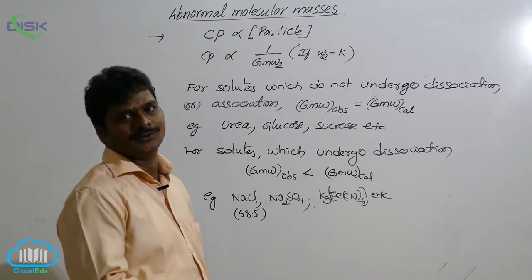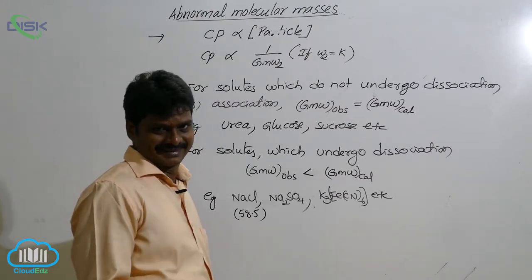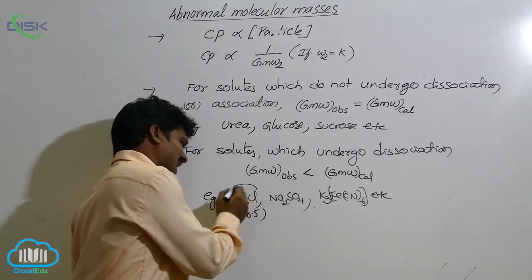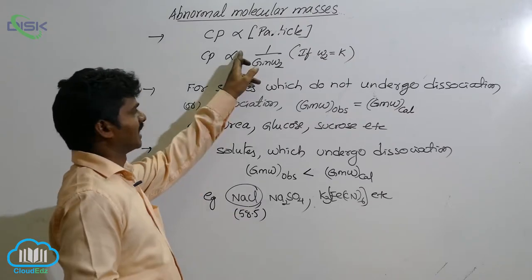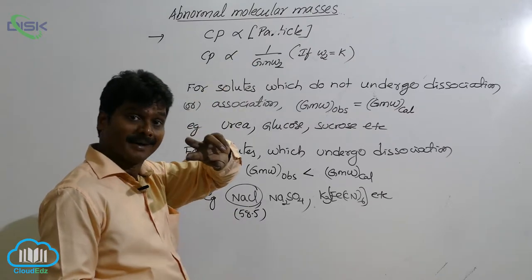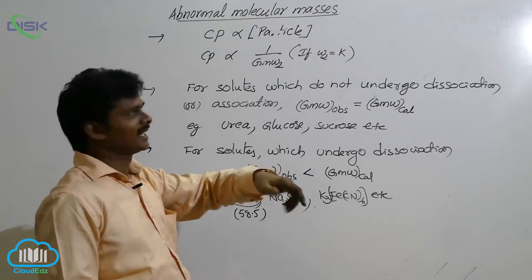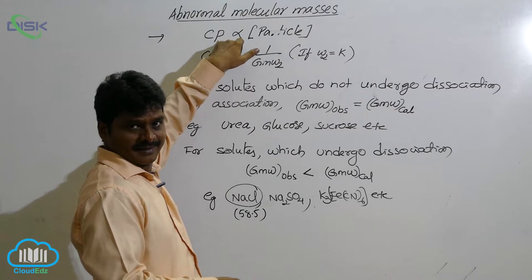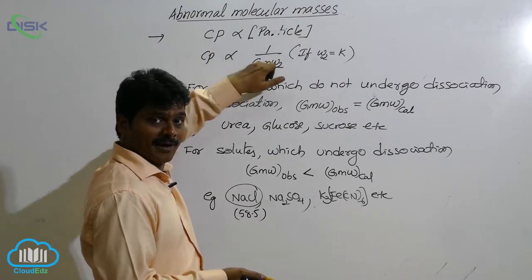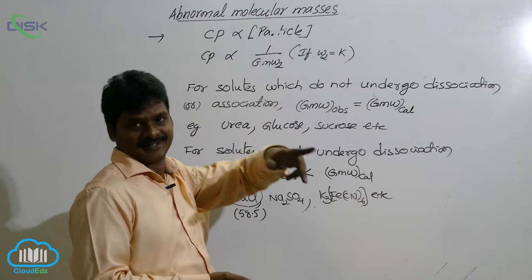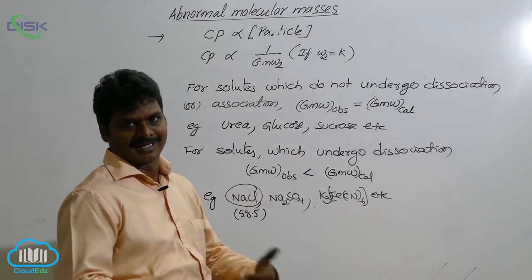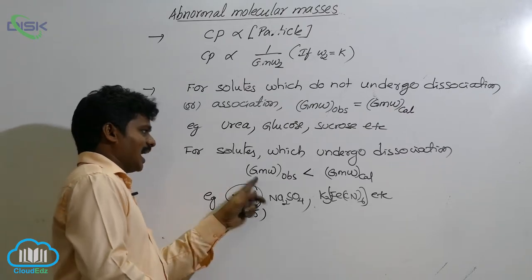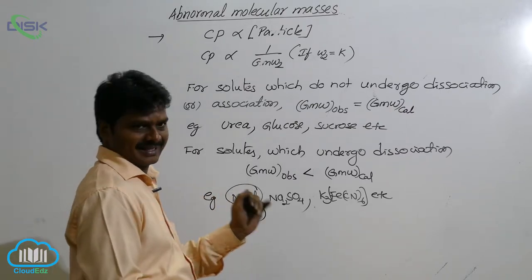The reason we get half the value for NaCl is that we consider NaCl as a single particle, but in solution its number gets doubled. Because of doubling the particle concentration, the colligative property also gets doubled. As the colligative property doubles, the gram molecular mass gets halved. So for dissociating solutes, the observed molecular weight value is less than the calculated value.